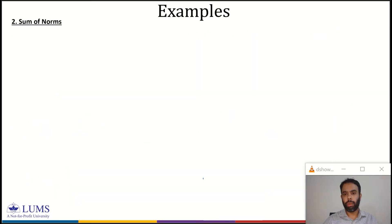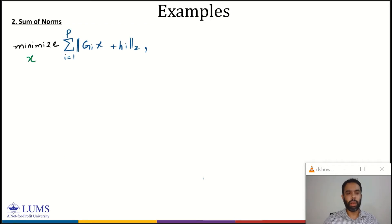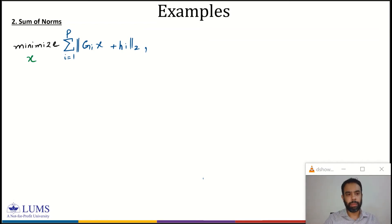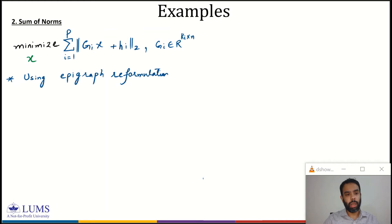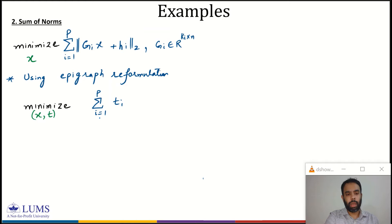Let's look at one more problem: we want to minimize the sum of norms. We are minimizing the sum of norms of G_i X + H_i for each I, summing from I equal to 1 to P. The optimization variable is X, where G_i is a matrix belonging to R^{K×N}. Using epigraph reformulation, we rewrite this as minimizing the sum of T_i for I equal to 1 to P.